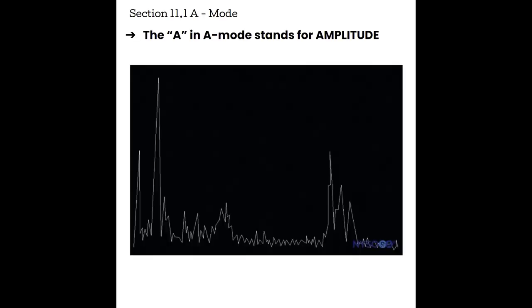The A in A mode stands for amplitude. In A mode, the machine displays a graph that has a spiked appearance. Each point on that graph represents the amplitude, or the strength, of the returning echo. Really tall spikes are going to be really strong reflectors, where shorter spikes are weak reflectors, and no spike is no reflector.